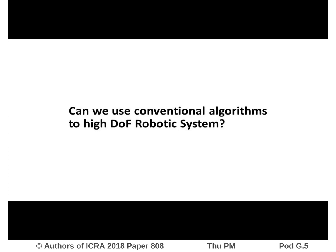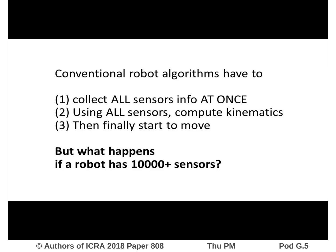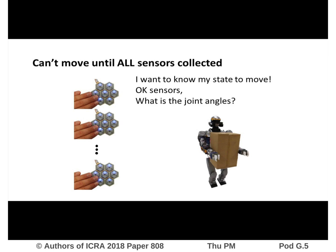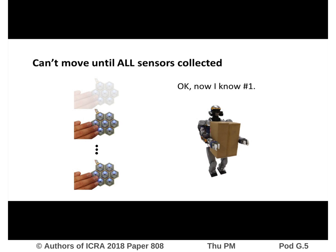The challenge of conventional algorithms is that they have to collect all sensor information at once. For example, a robot that wants to calculate forward kinematics has to access sensors 10,000 times before it can calculate the forward kinematics. But this takes too long.